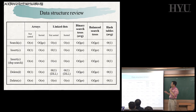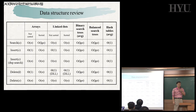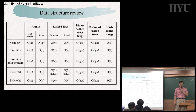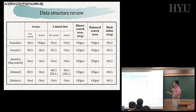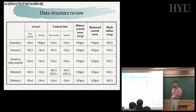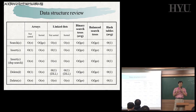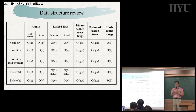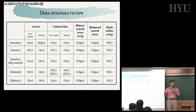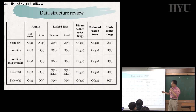In the data structure course you learned five data structures. Let's compare those data structures. The simplest one is an array. There are two kinds of arrays: a normal array — that is, it is not sorted — and a sorted array.